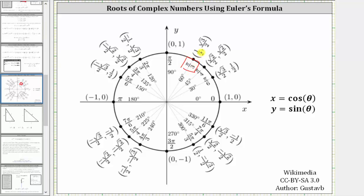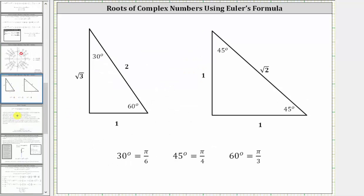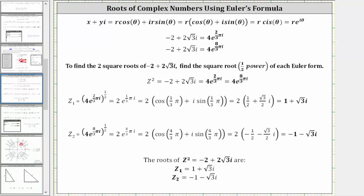We can also find these trig function values using the 30-60-90 reference triangle. For the last step, we distribute the two: two times one-half is one, and two times square root three divided by two is square root three, giving us one plus square root three i for the first root or first complex solution.